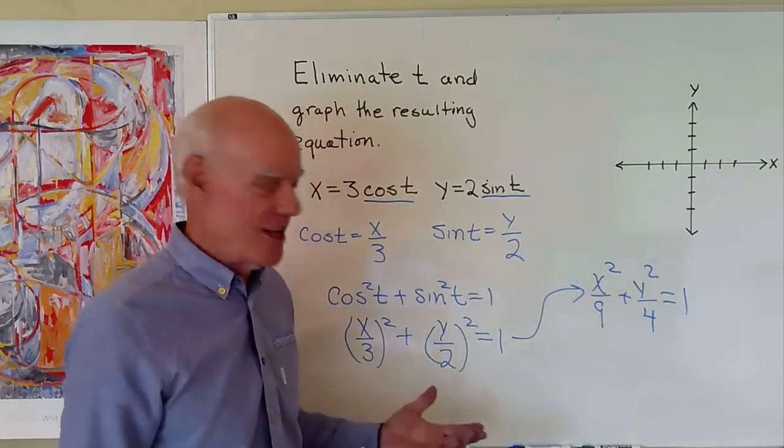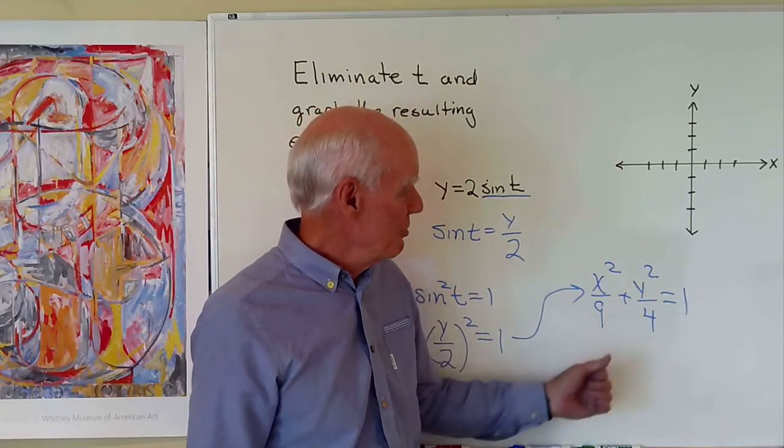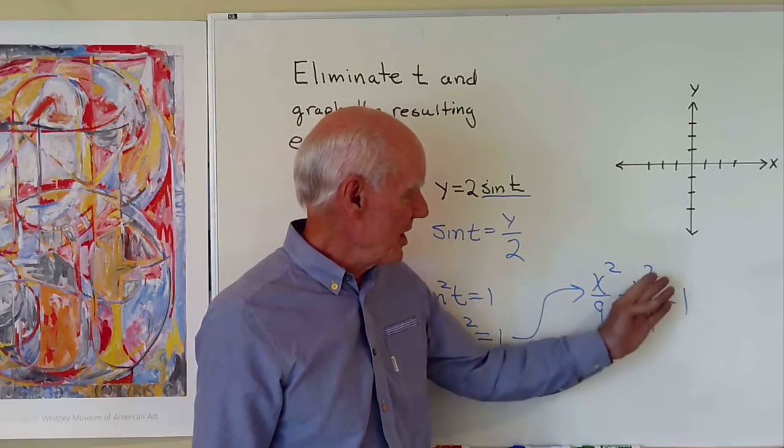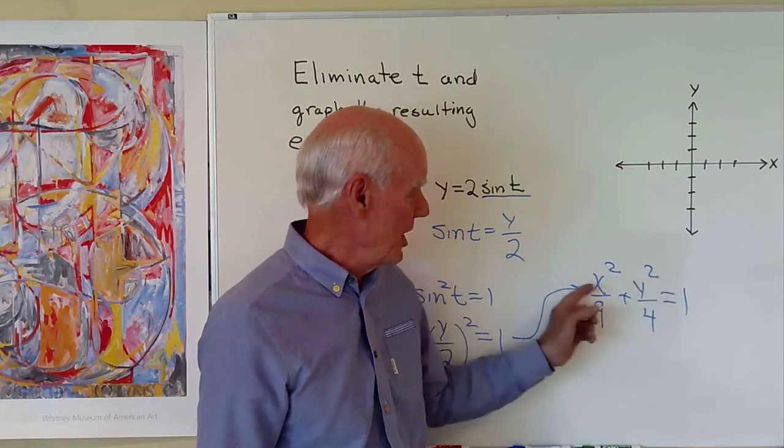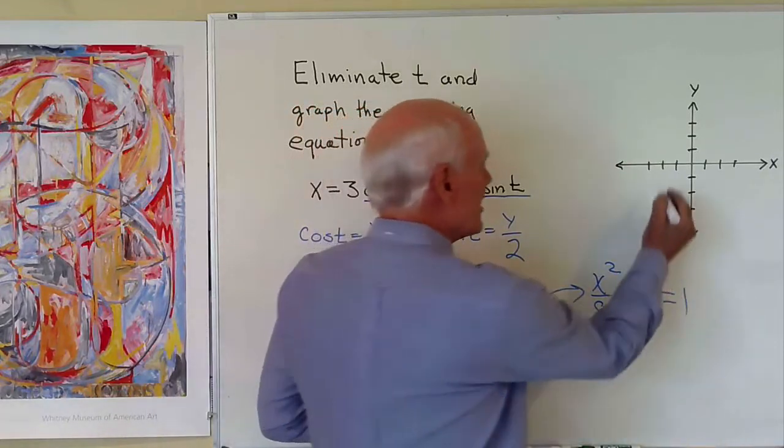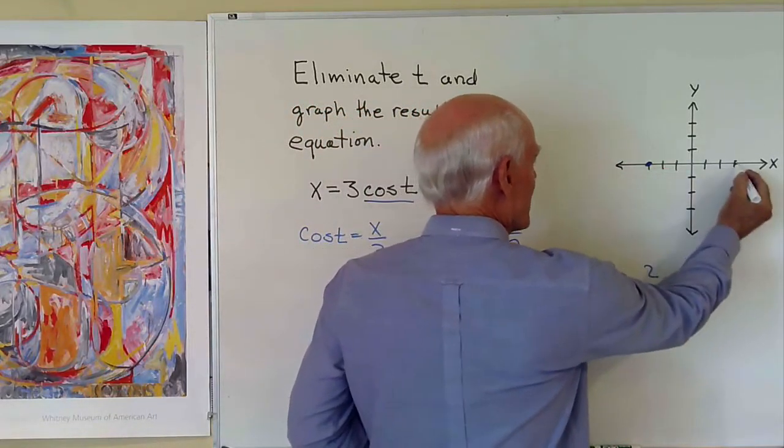And I recognize that as being the equation of an ellipse. To find where it crosses the x-axis, I let y be equal to zero, and I see that x is going to be plus or minus three. So it'll cross the x-axis here and here.